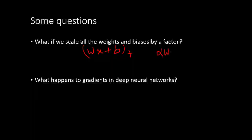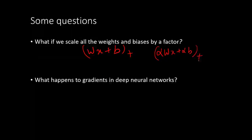Consider ReLU of (Wx + b). If instead we take ReLU of (alpha·W·x + alpha·b) where alpha > 1, the sign of the expression inside does not change. So qualitatively, whatever gets mapped to zero versus identity under ReLU does not change — meaning the weights and biases are not unique for achieving the same function. This is less of a problem with sigmoid since it's a continuous curve.